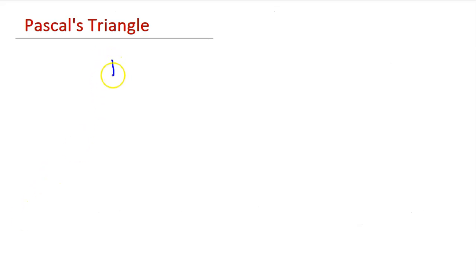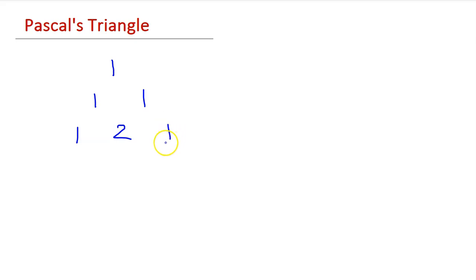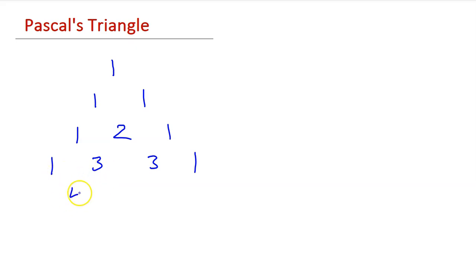You can build something called Pascal's Triangle by beginning with a triangle of 1's. On the next row, because 1 plus 1 is 2, we put a 2 right in the middle, and the beginning and end of every row will be a 1. Going to the next row, 1 plus 2 is 3, and 2 plus 1 is 3. We begin and end always with a 1.